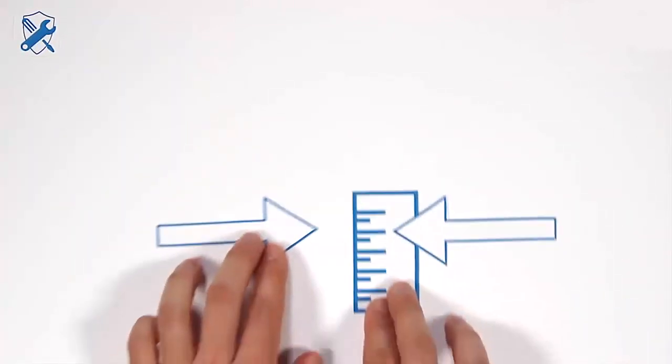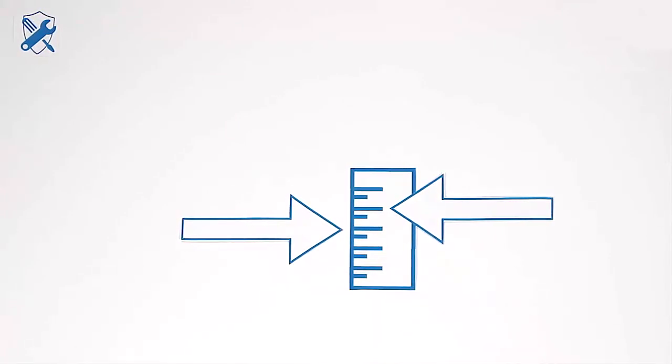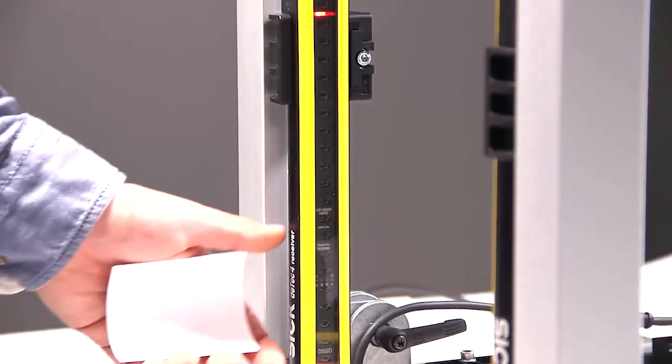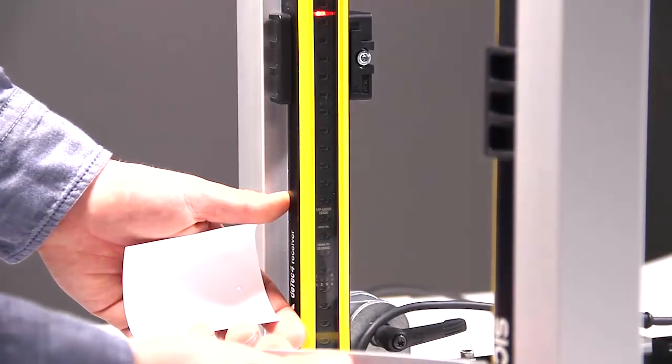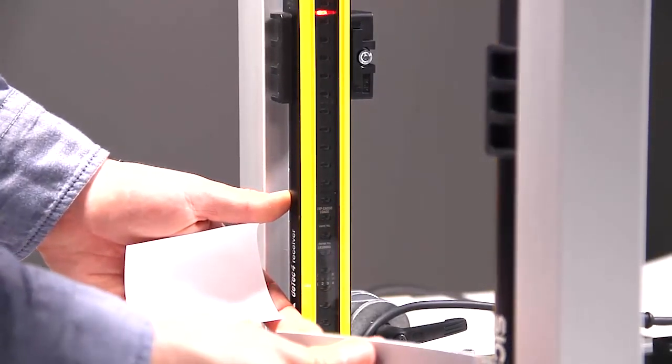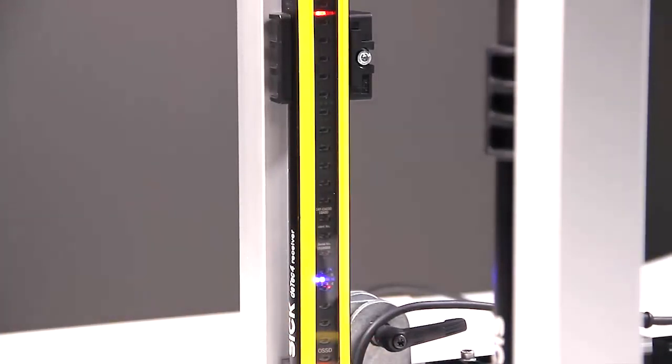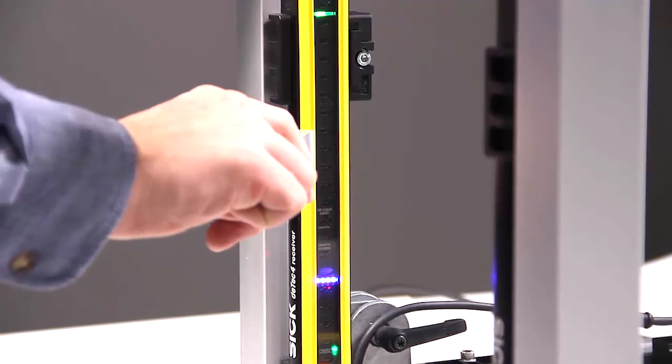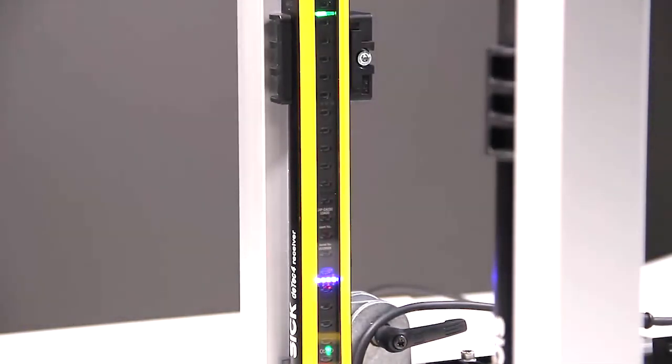After the installation, the next task is the adjustment. Supported by a laser beam, initially the sender is roughly aligned to the receiver. Guided by LEDs, the alignment is fine tuned at the receiver. The more LEDs are on, the better the alignment.